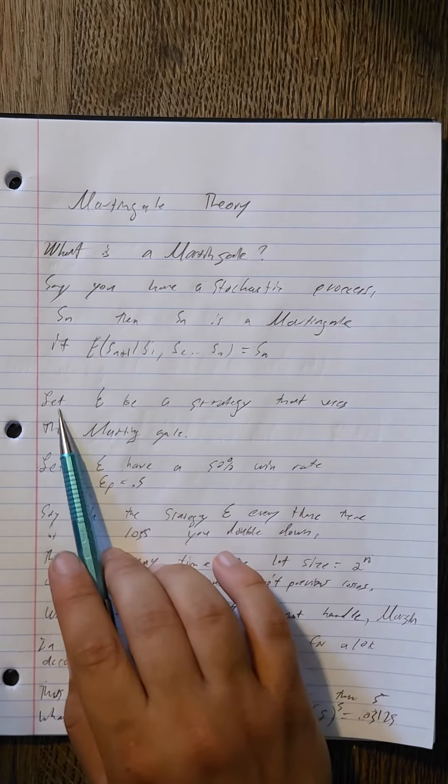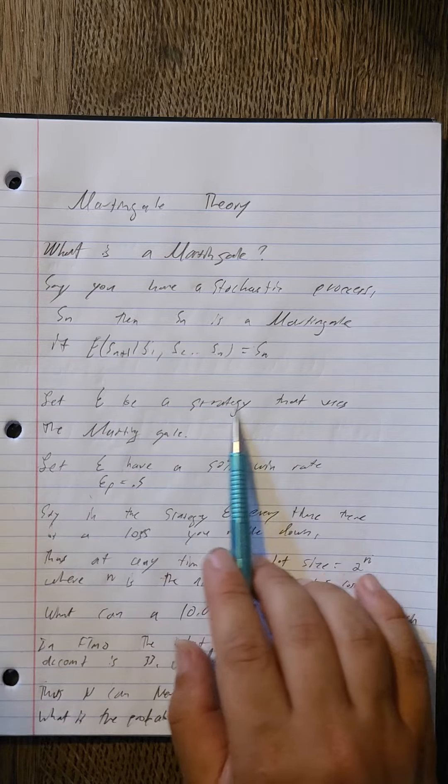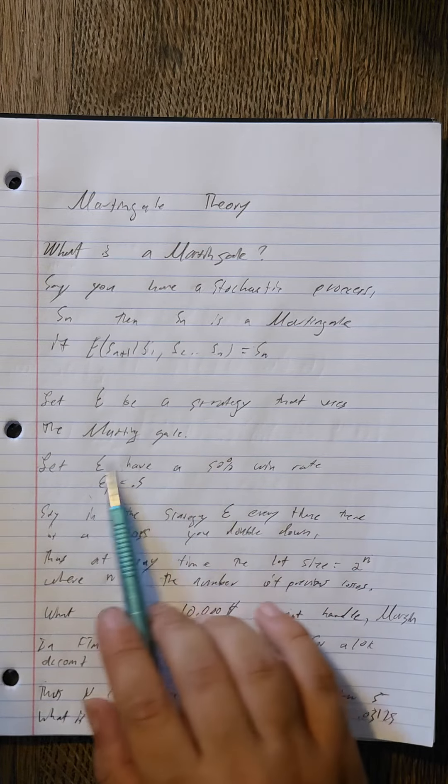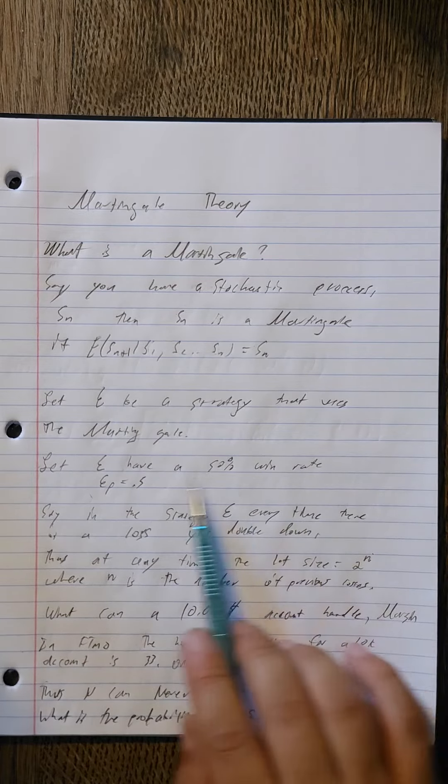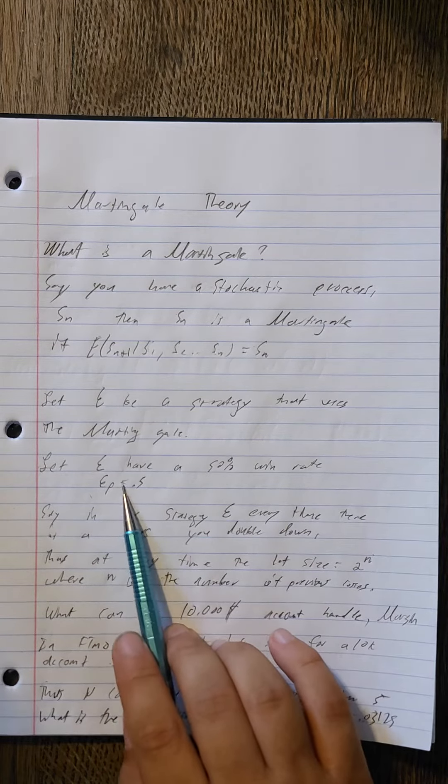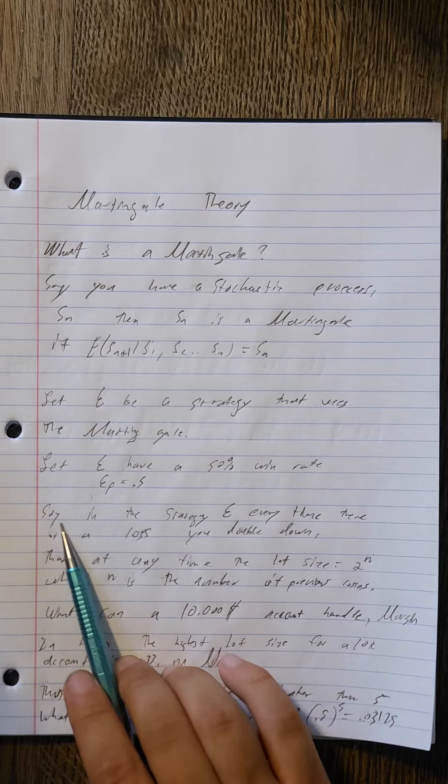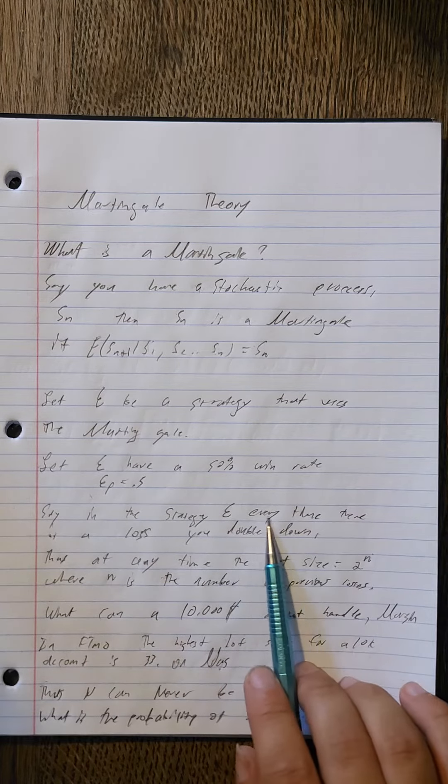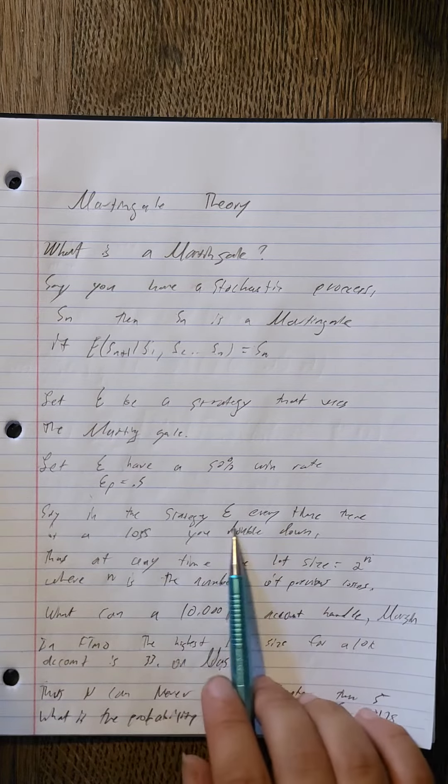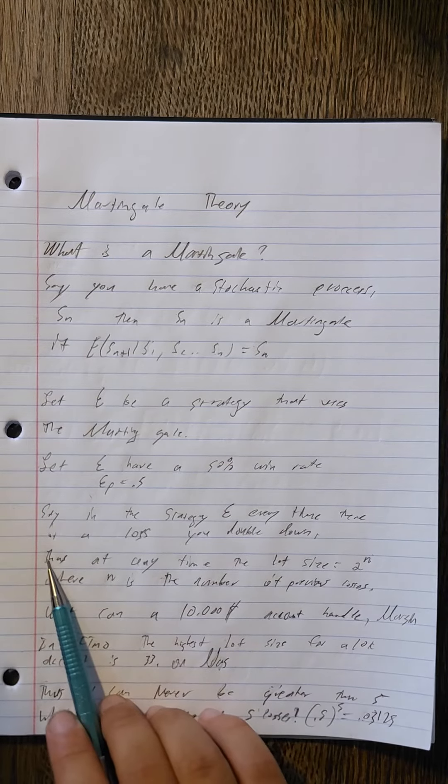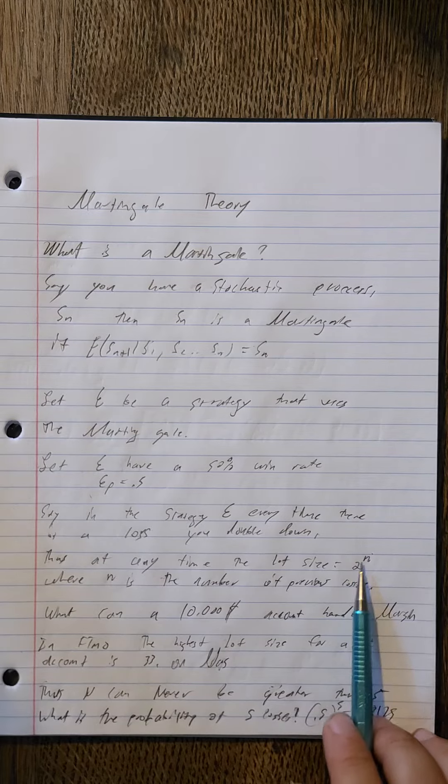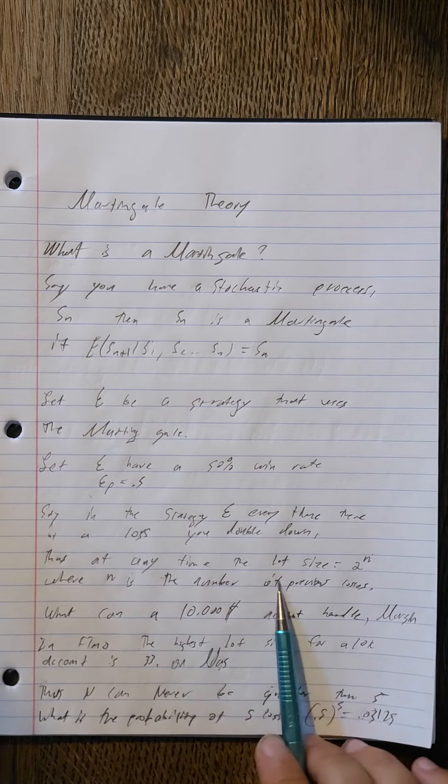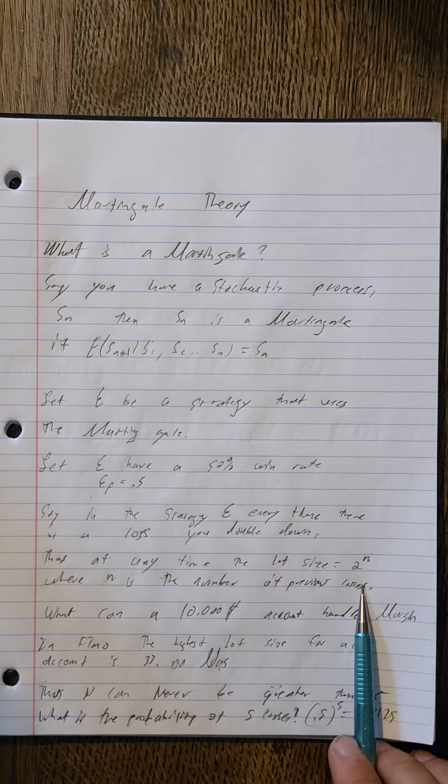So let epsilon be a trading strategy that uses the martingale. Let epsilon have a 50% win rate, thus epsilon sub p equals 0.5. Say in the strategy epsilon, every time there is a loss you double down. Thus at any time the lot size is equal to 2 to the n, where n is the number of previous losses.